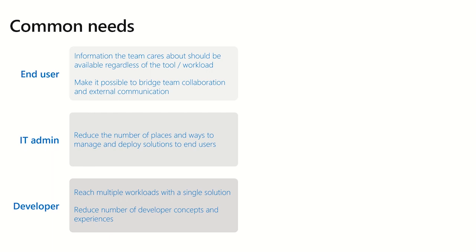Speaking of LOB, or line of business apps, the IT admin wishes to reduce the number of places and ways to manage and deploy solutions to their end users. One of the challenges big IT organizations face is getting approval to deploy and run new internal applications. The SharePoint framework does this quite well — it runs on SharePoint for free, making it much easier to spin up and manage an application in what is usually an already IT-approved environment. In an enterprise environment, it can always be tricky to get approval to host any new application — you need to get approval for the server costs and ensure the data is secure, which SharePoint handles out of the box.